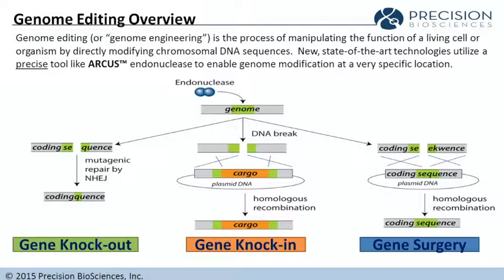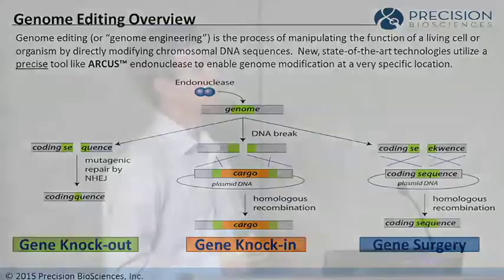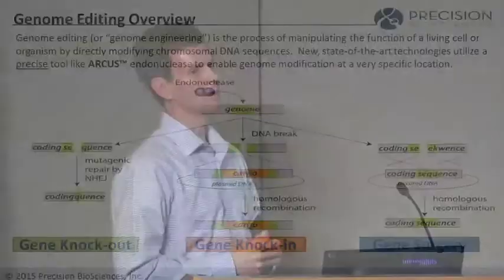What I'm going to walk you through today is what Precision Biosciences does. If you look at a relatively broad definition, genome editing or genome engineering is a process of manipulating the function of a living cell or organism by directly modifying chromosomal DNA sequences. In a classical sense, the creation of transgenic or GMO plants has been going on since the 1980s, so it's not new in that sense.